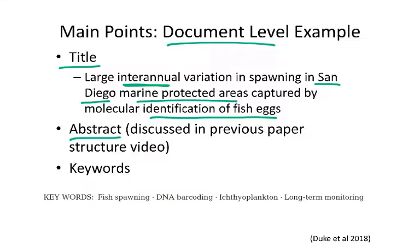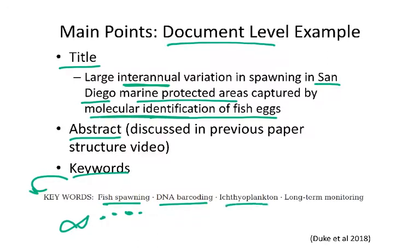The keywords for that particular paper are: fish spawning (when fish release eggs and sperm into the water to be fertilized), DNA barcoding (a way to do molecular identification of fish eggs), ichthyoplankton (fish eggs and larvae), and long-term monitoring (meaning this study spans multiple years rather than a single sampling point). So the title, abstract, and keywords together have already given us a pretty good idea about what this paper is about and what the main ideas might be.